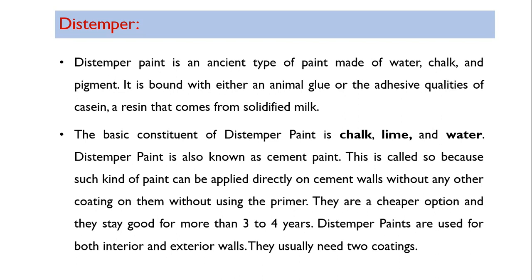Distemper paint is bound with either an animal glue or the adhesive qualities of casein resin that comes from solidified milk. The basic constituents of distemper paint are chalk, lime, and water as carrier. Distemper paints are also known as cement paint, and nowadays a variety of cement paints are available in the market with various brand names. They are widely used for economical painting of buildings.